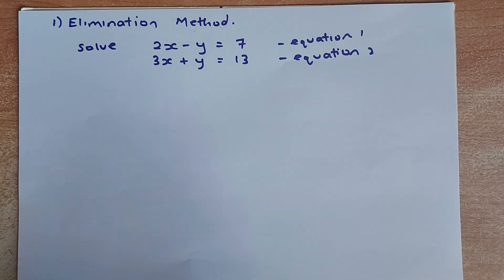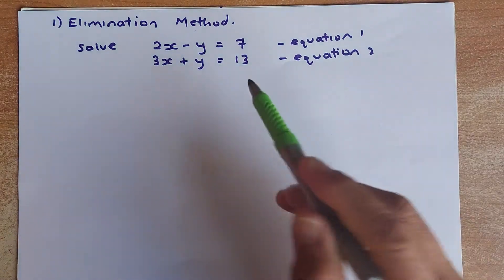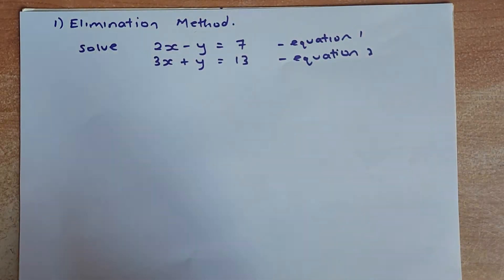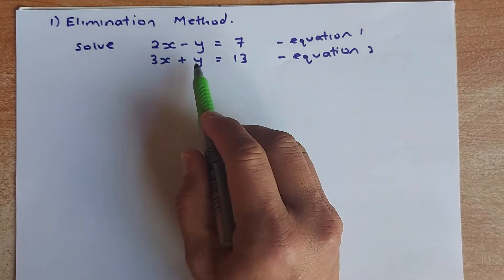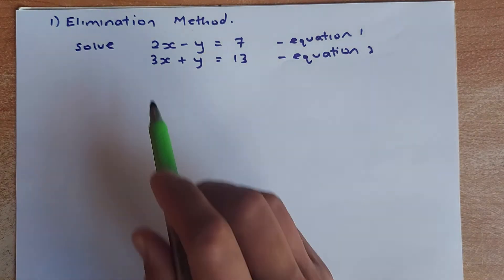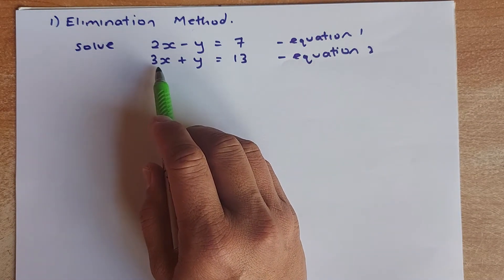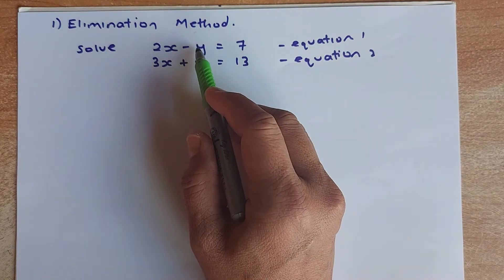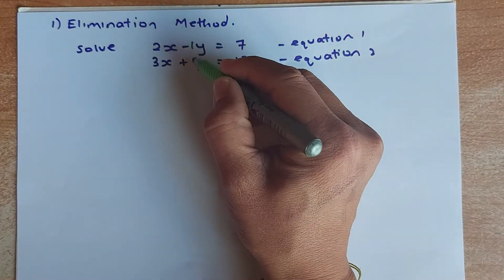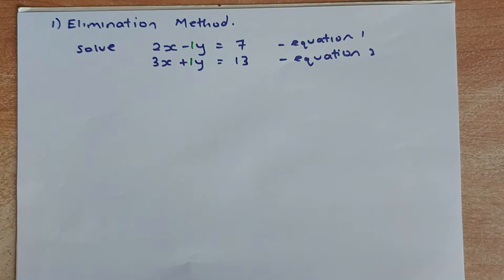Suppose we have an example: 2X minus Y equals 7 — let that be equation 1. And 3X plus Y equals 13 — that is equation 2. The idea of elimination is that the coefficient of X or Y must be the same. The coefficient of X is 2 in equation 1 and 3 in equation 2 — not the same. But for Y, the coefficient is minus 1 and plus 1, so we can actually eliminate the Y.